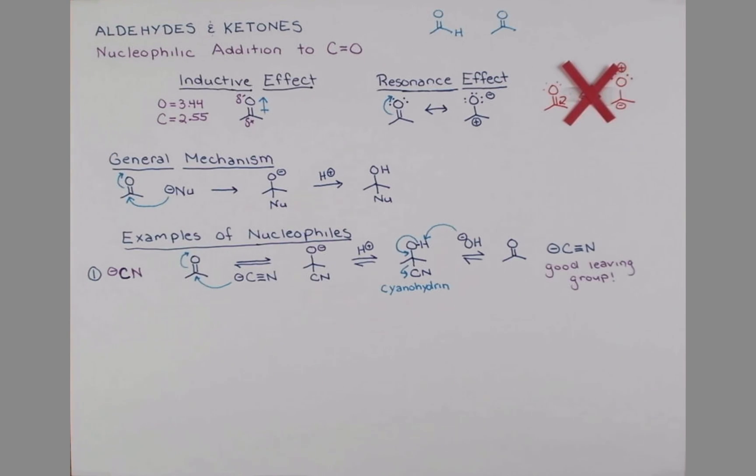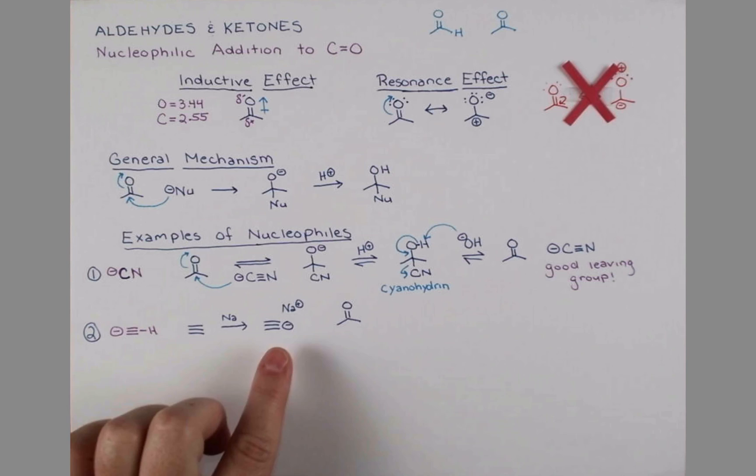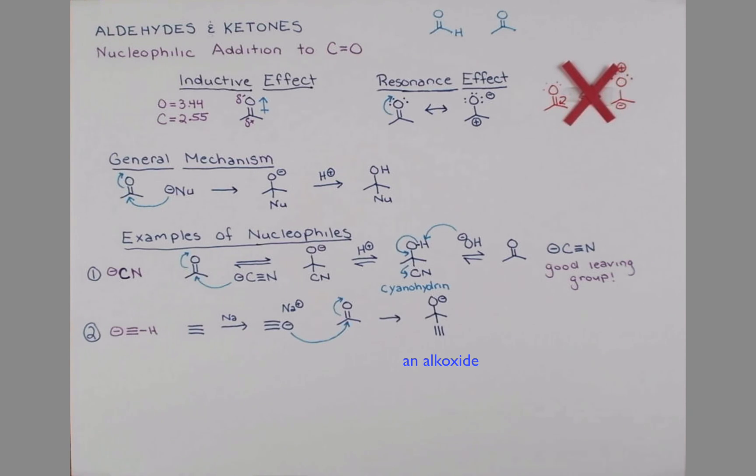Another nucleophile that adds to carbonyls is the acetylide anion. This nucleophile again has a negative charge on carbon with a carbon-carbon triple bond and an H on this end. The way that we can generate this is by treating acetylene with sodium metal. This gives us our anion and a sodium plus that's hanging out. This nucleophile can add to our carbonyl. The electrons will bond here, pushing up onto oxygen. From this we get our anion, our alkoxide, that can be treated with a little bit of acid to give our alcohol.